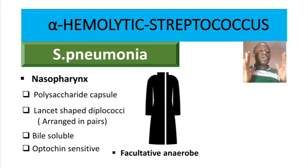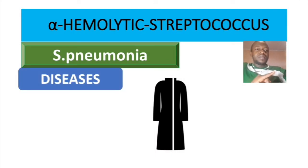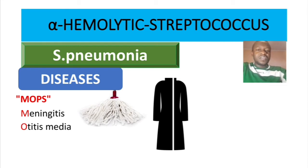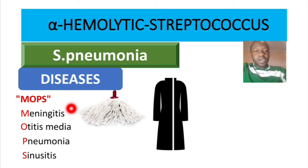The diseases caused by Streptococcus pneumoniae can be remembered by the mnemonic MOPS — like the real mops. M is for meningitis, O for otitis media, P for pneumonia, and S for sinusitis, which is inflammation of the sinuses. Streptococcus pneumoniae is actually the number one cause of all these conditions. Otitis media is particularly notable in children.